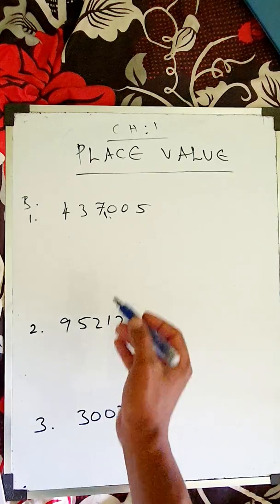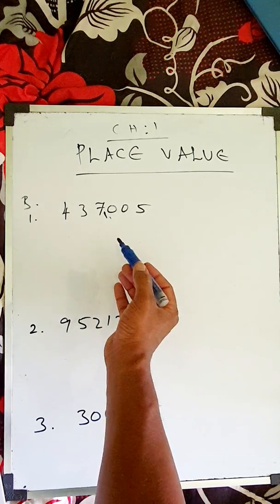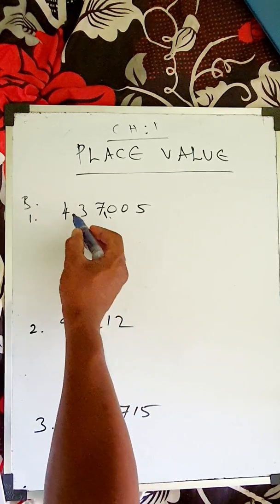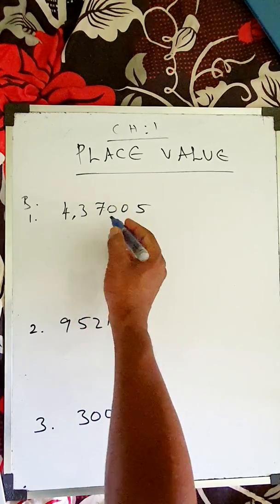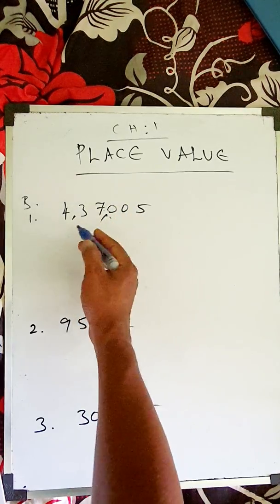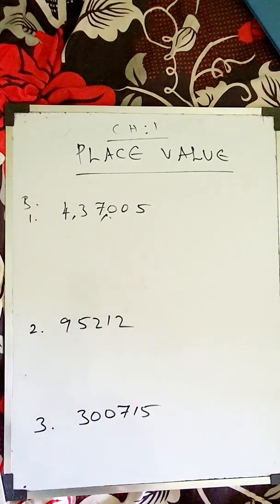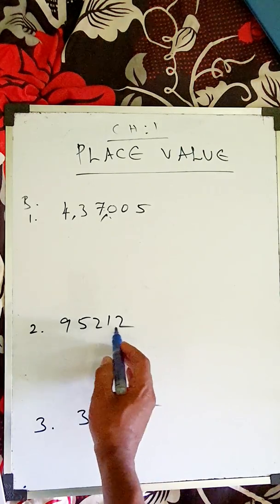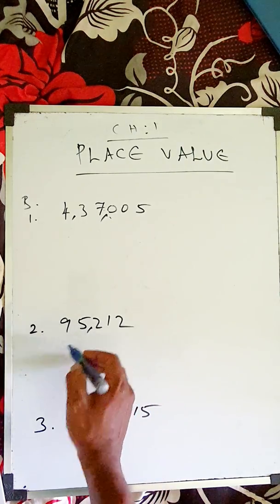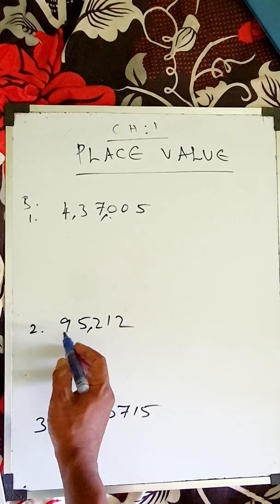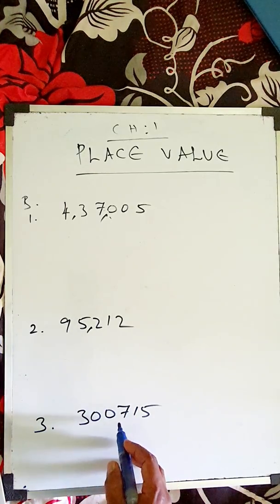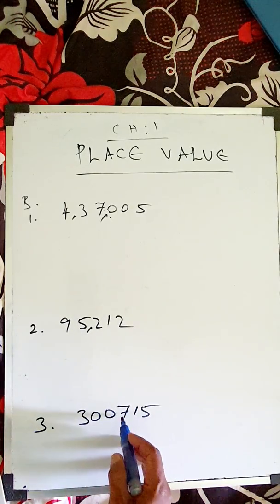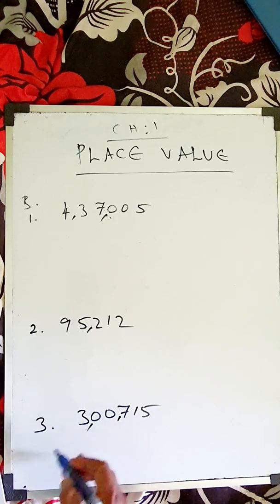After the first three numbers, you put a comma. Then the next two numbers, you put another comma. So the pattern is: three numbers, then two numbers, then the remaining numbers. Here, first three numbers — put a comma. Again two numbers — put a comma.